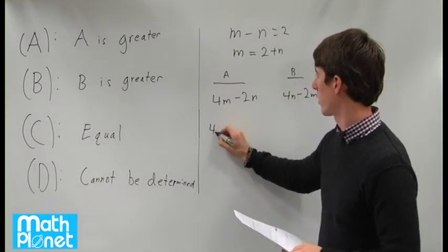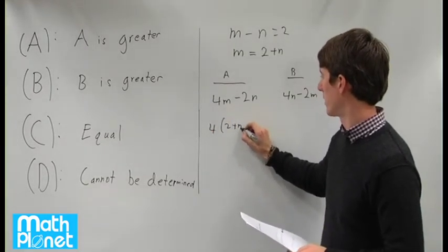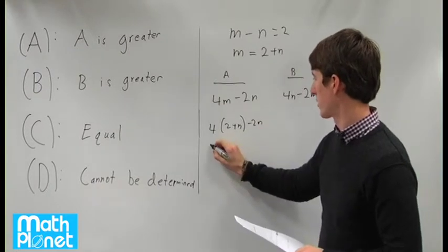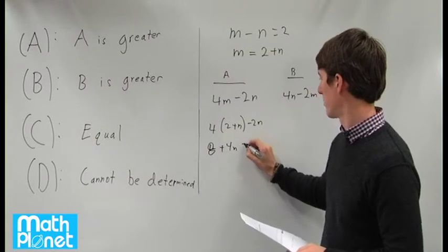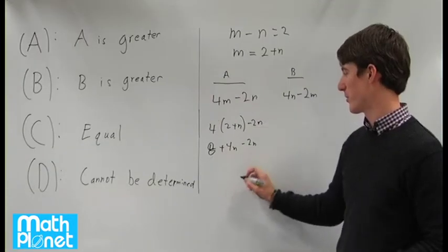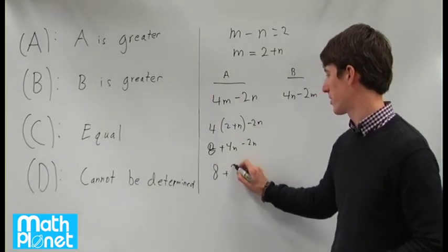We have 4 times (2 plus n) minus 2n. That gives us 8 plus 4n minus 2n, which simplifies to 8 plus 2n.